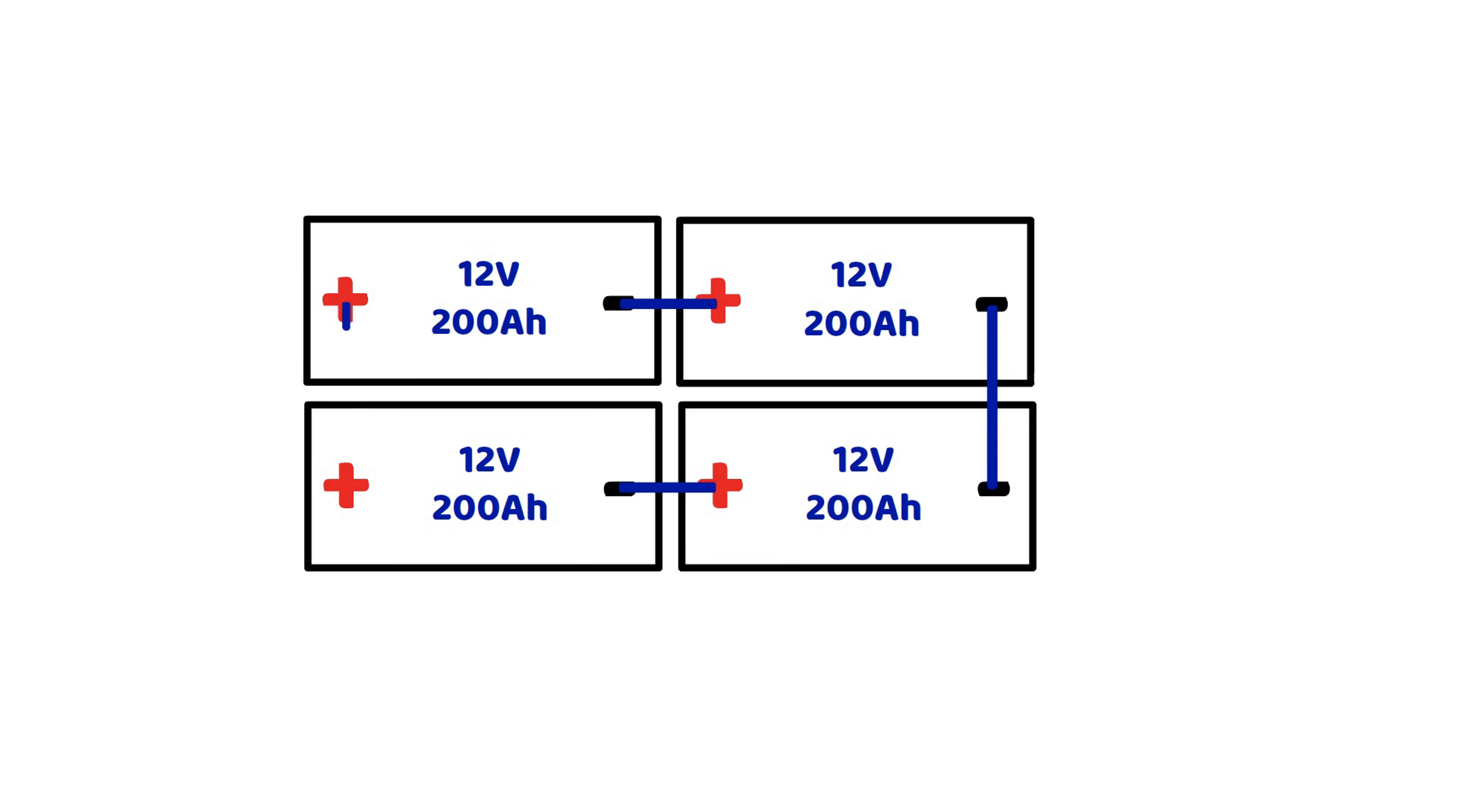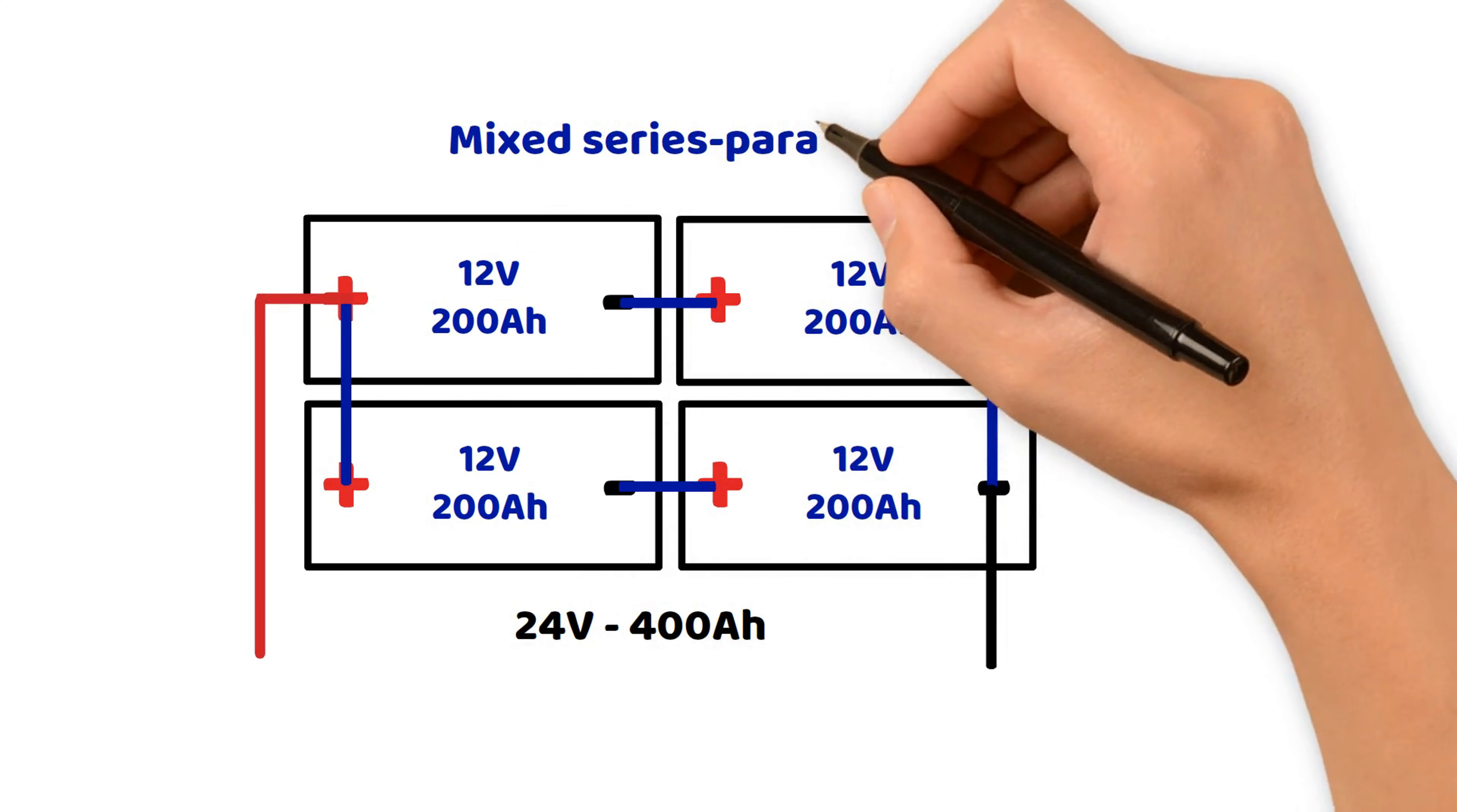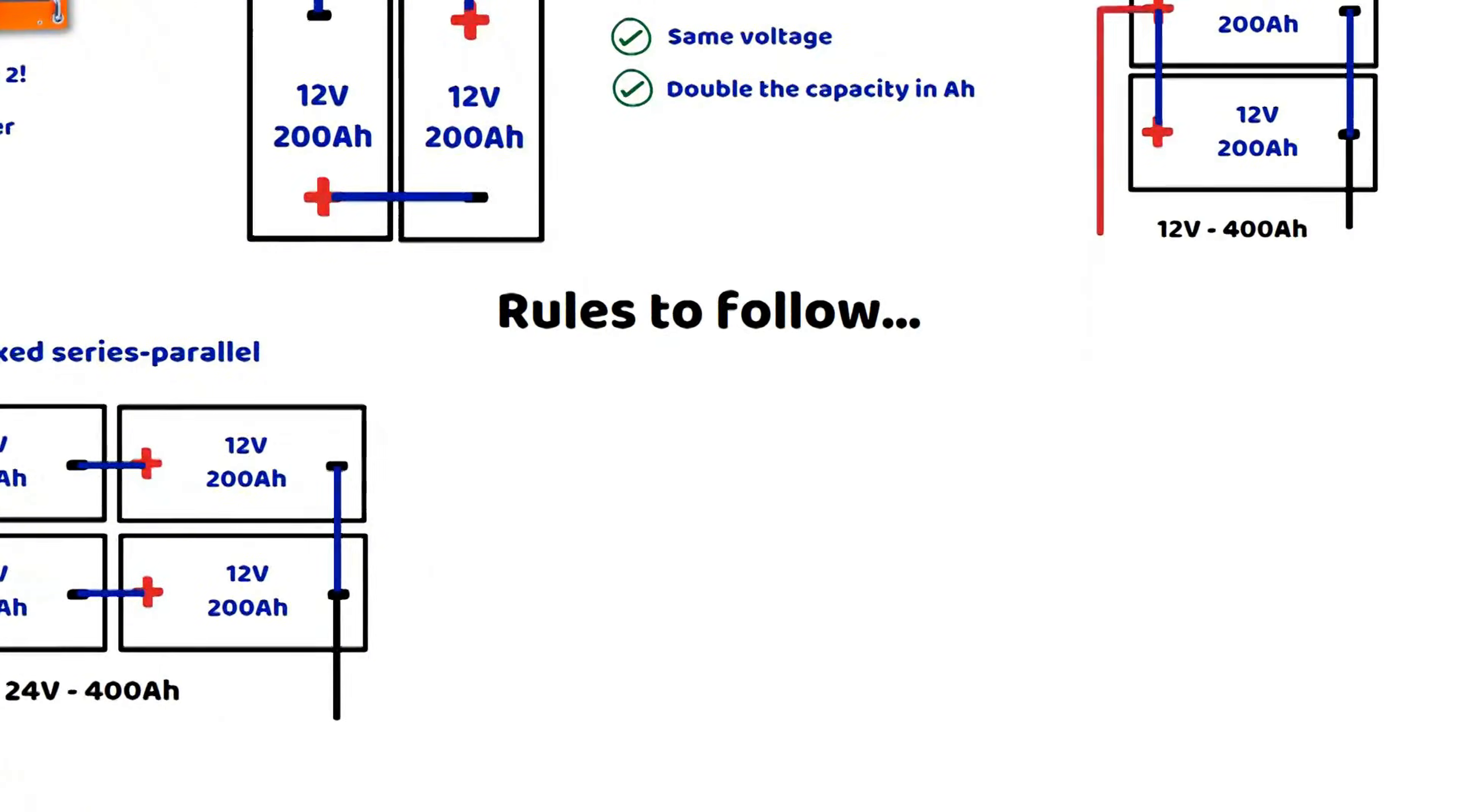It is important to note some safety and compatibility rules before making any connections. All the batteries in the same group must have the same nominal voltage, the same capacity, and the same chemistry, such as lead acid or lithium. For example, a lead acid battery must not be connected with a lithium battery.